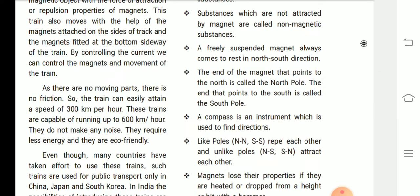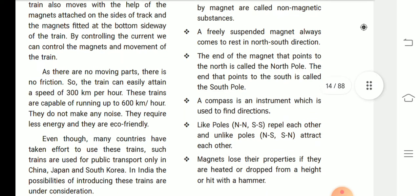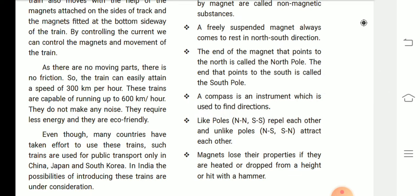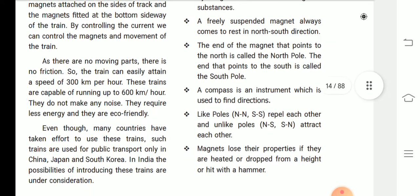A freely suspended magnet always comes to rest in north-south direction. The end of the magnet that points to the north is called the north pole. The end that points to the south is called the south pole. A compass is an instrument which is used to find directions.